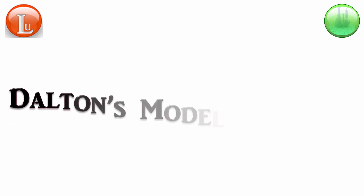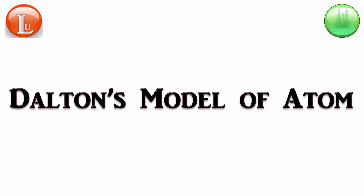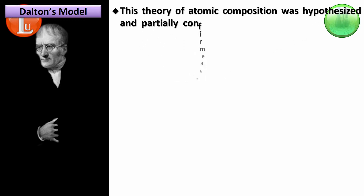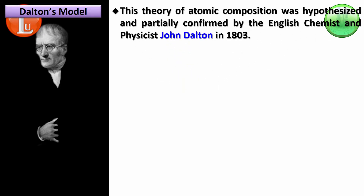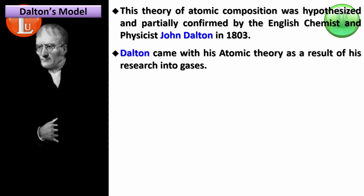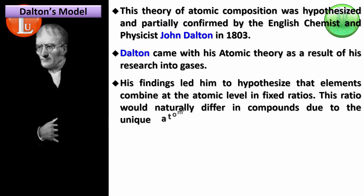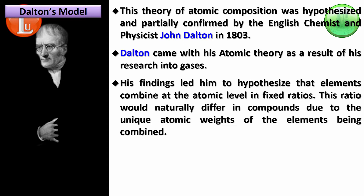And then came Dalton's model of the atom, proposed in 1803 by the English chemist and physicist John Dalton. This theory of atomic composition was hypothesized and partially confirmed by experiments. Dalton came with this atomic theory as a result of his research and experiments into gases — so here comes the first model which has some basis in the form of experiments. His findings led him to hypothesize that elements combine at the atomic level in fixed ratios, which would naturally differ in compounds due to the unique atomic weights of elements being combined.